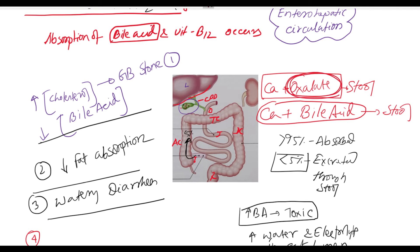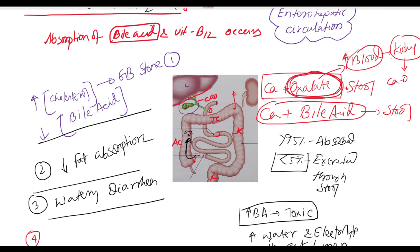This free oxalate will be absorbed from the colon in high amounts, so the oxalate level in the blood will be increased. This oxalate in the blood passes through the kidney, and in the renal tubular cells, the oxalate precipitates with calcium and forms calcium oxalate salt, thereby forming calcium oxalate stones. Consequence number four is formation of renal stones.